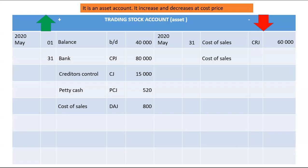We debit cost of sales and credit trading stock because the credit to trading stock represents the cost price of goods sold. For goods sold on credit — identified because the cost of sales total comes from the Debtors Journal — the amount is 25,000. The business can also return goods to suppliers, the creditors. When returning goods to creditors, you credit trading stock with Creditors Control, recorded in the Creditors Allowances Journal (CAJ), and the amount is 3,500.